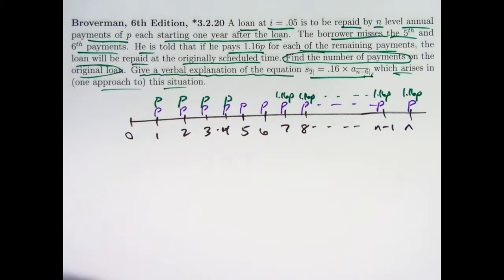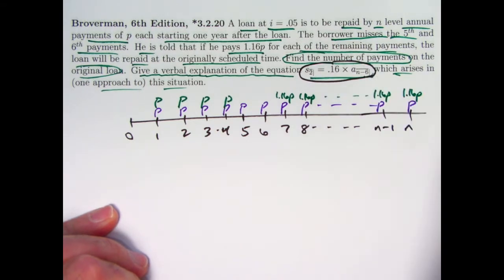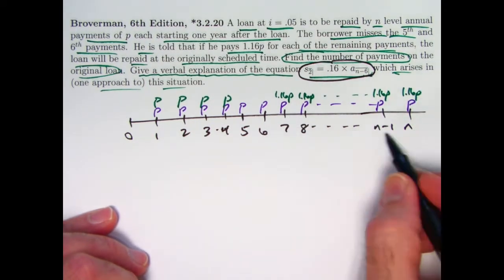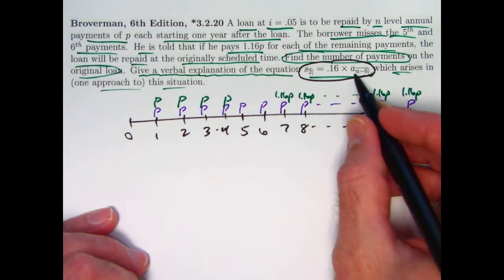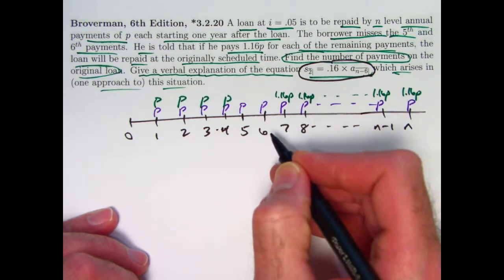And if we're thinking about trying to get to this equation as part of our solution, you see that there are n minus 6 payments starting at time 7 and going through time n, and we have an a there, so that would be the present value of that one period before the first payment at time 6.